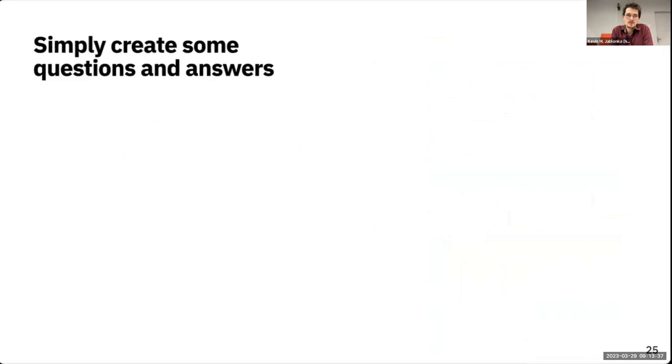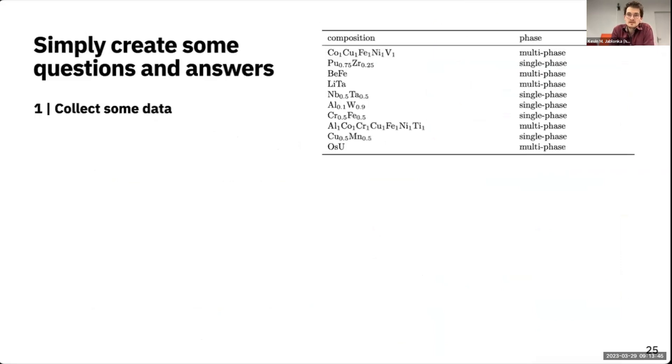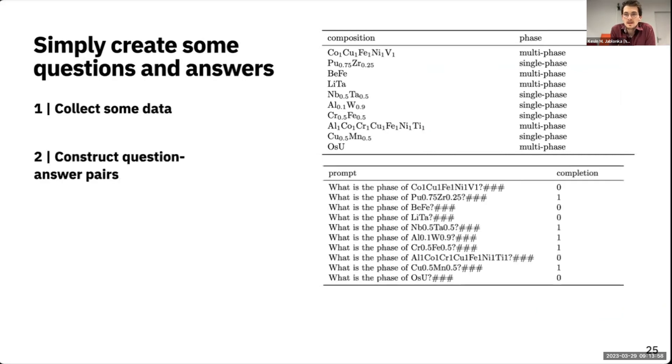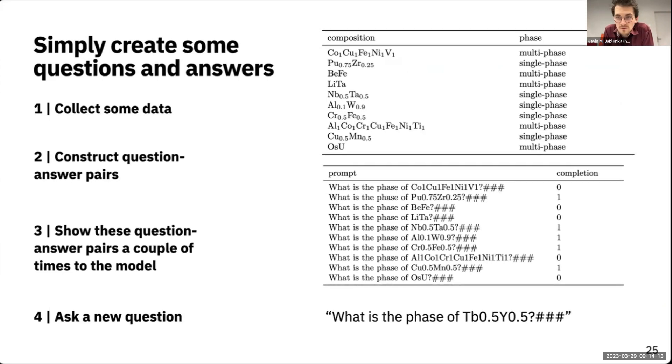This was motivation for us to look into something quite perhaps naive, but very simple - just make questions and answers for different materials science and chemistry problems. We took some datasets, in this case alloys, where you want to know if they form a single or multi-phase. We have this table with maybe just those 10 examples, and then form prompts, questions and completions. We just show those prompts to a model. We fine-tune GPT-3 with just those 10 prompts. If we have a new alloy, we can just ask the model what the phase will be.